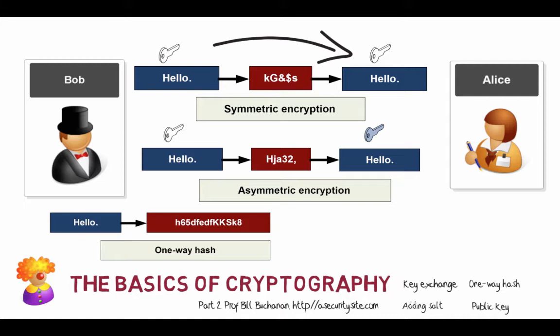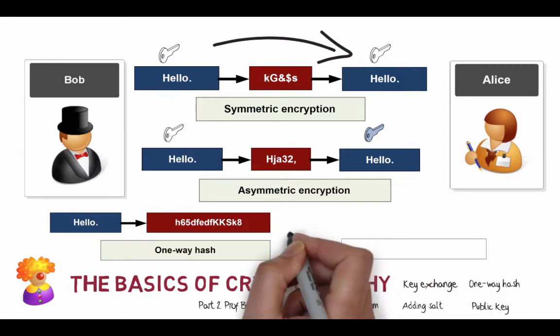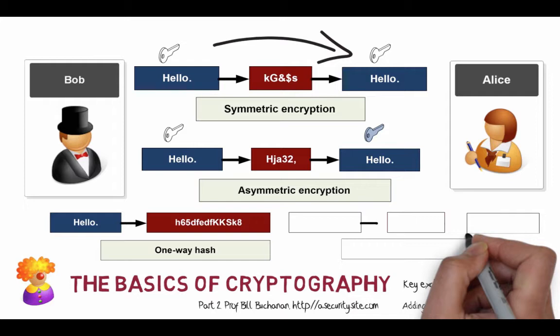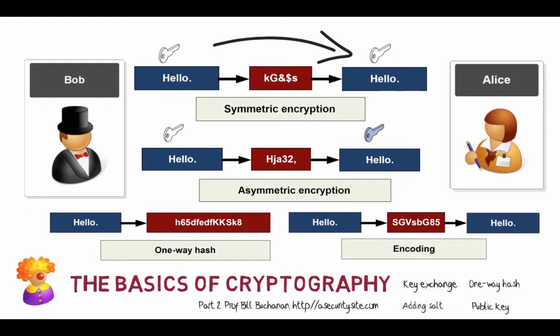The third type is a one-way hash: we take a message or data, put it through an algorithm, and end up with a special hash code which we can't reverse. The final method is encoding — with encoding we know how to encode into something and how to decode from it. Base64 and hexadecimal are two different encoding standards.